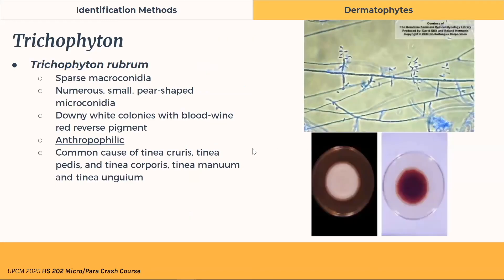Trichophyton rubrum is characterized by sparse macroconidia and more commonly pear- or tear-shaped microconidia. On agar, it's downy white on the surface but has a blood-wine-red reverse pigment — hence 'rubrum' meaning red. It is anthropophilic, so humans are the natural host, making it a common cause of tinea infections.